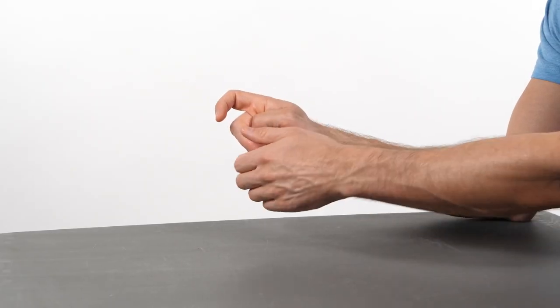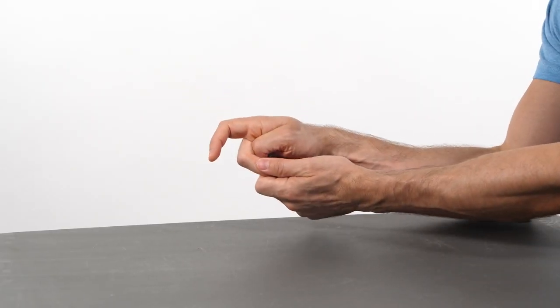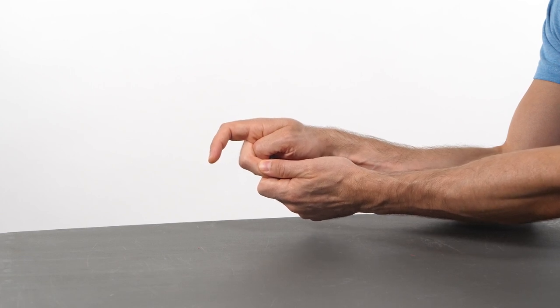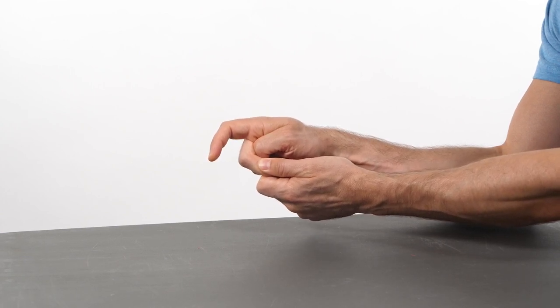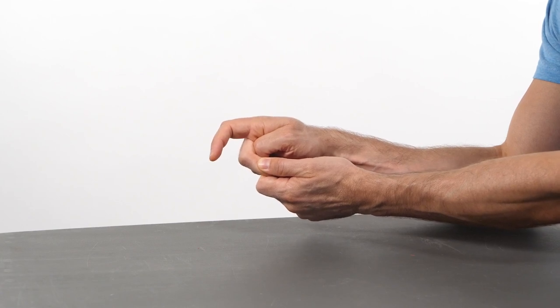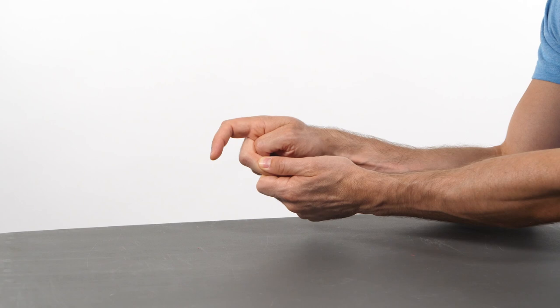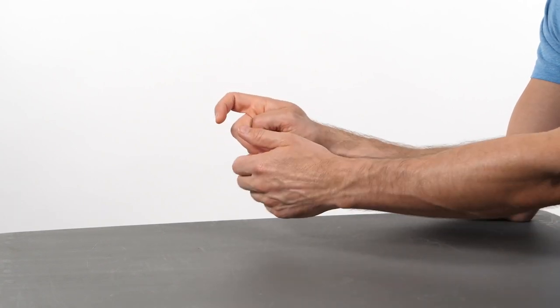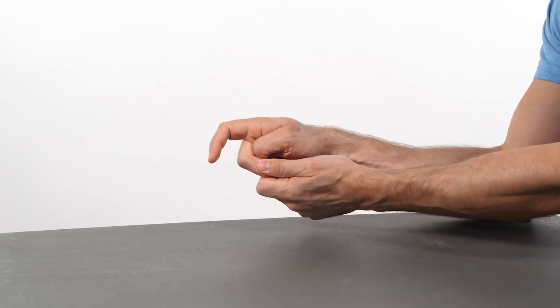The climber takes their thumb and wraps it underneath the proximal phalanx. They grasp their middle phalanx and provide joint oscillatory mobilizations to the PIP joint. These joint oscillations are performed at a rate of one to two hertz. Joint mobilization techniques can also be sustained pressure.